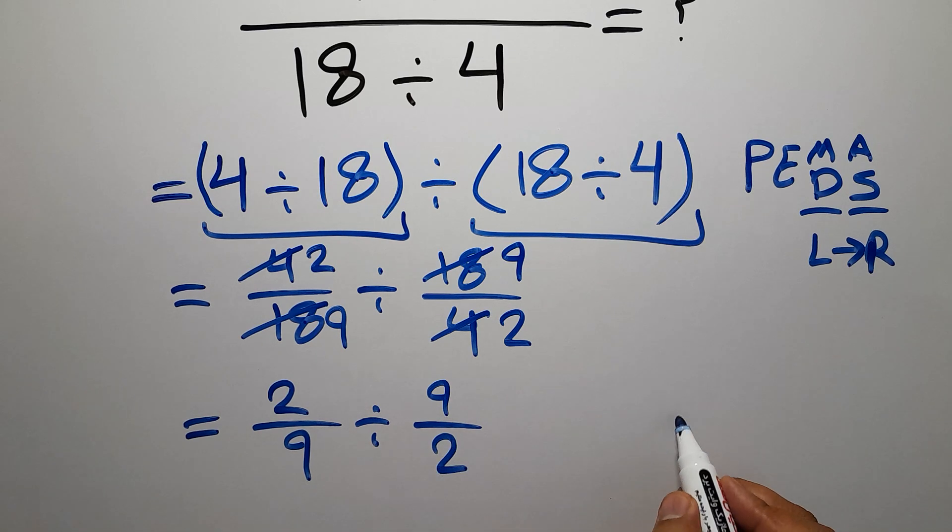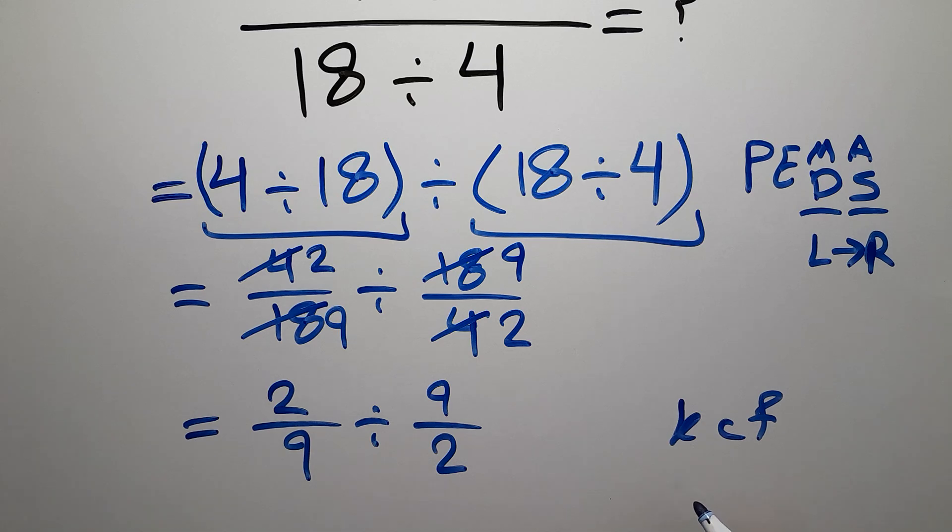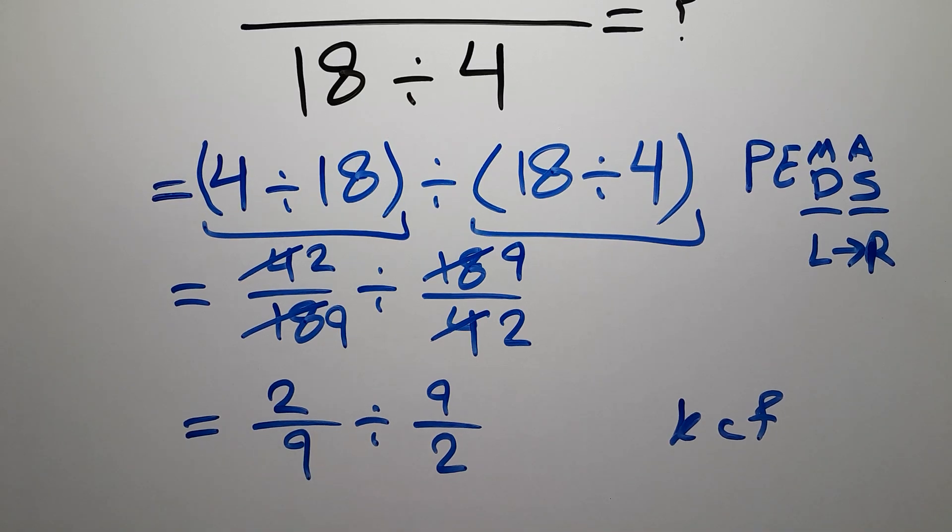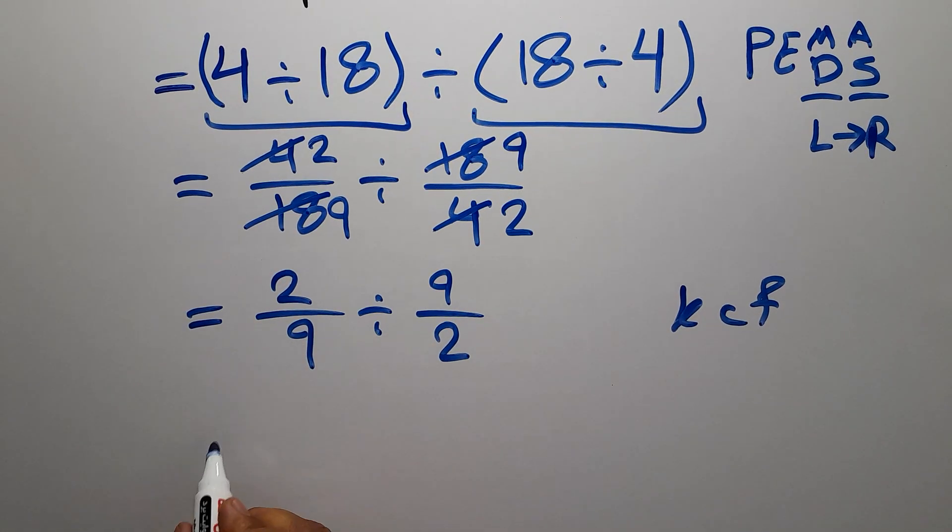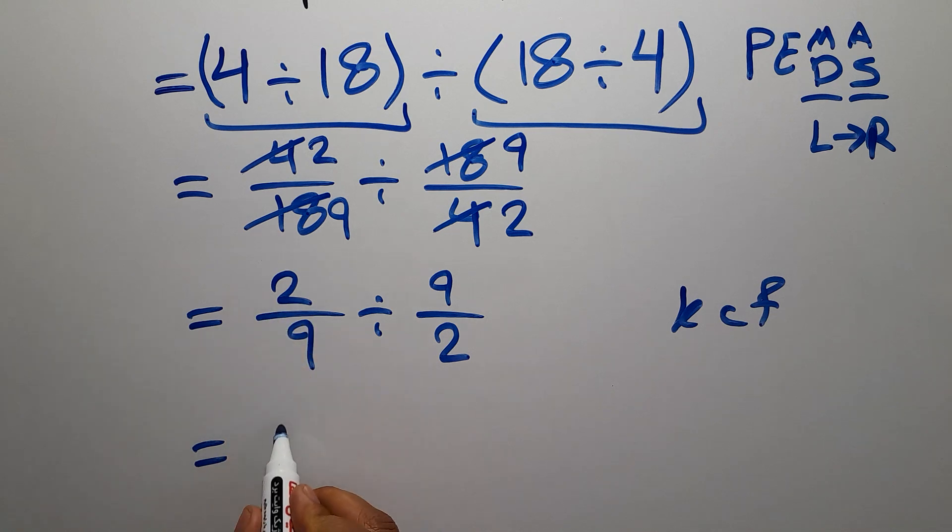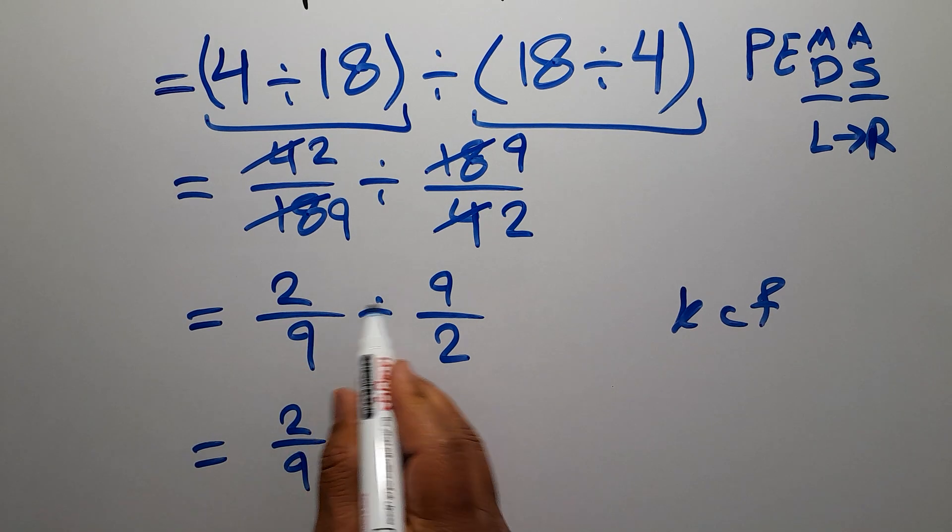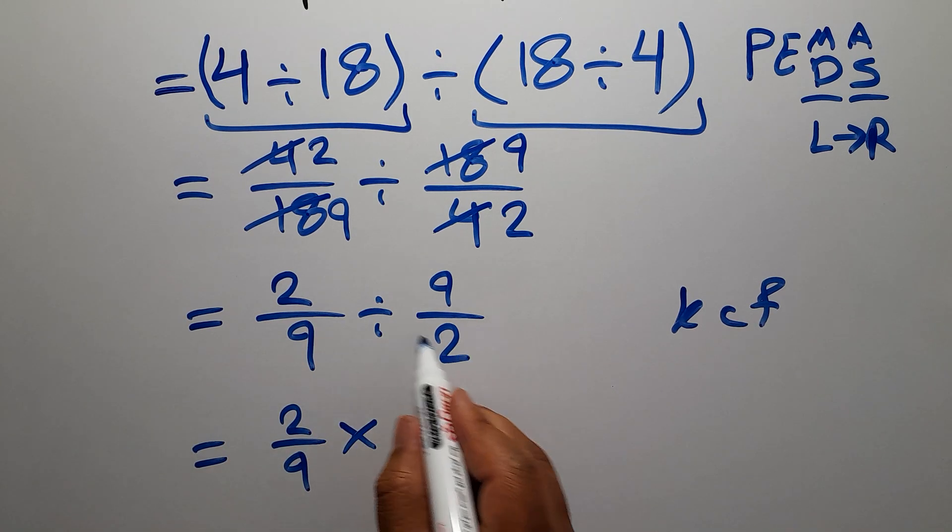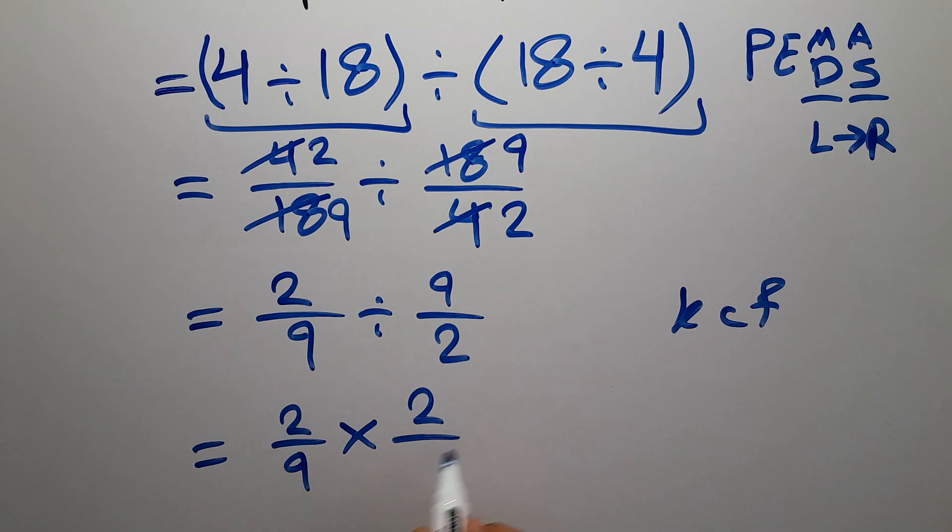According to the KCF rule, K stands for keep, C stands for change, and F stands for flip. We keep the first fraction, 2 over 9, change division to multiplication, and flip the second fraction to 2 over 9.